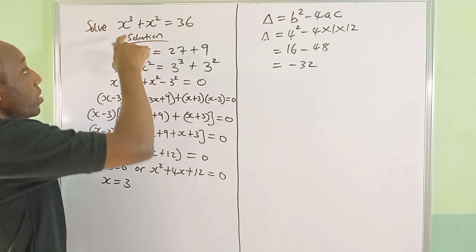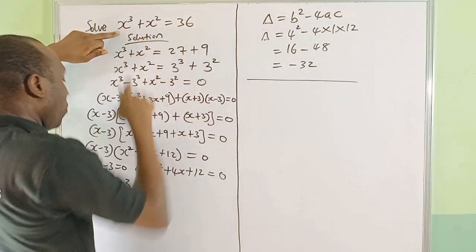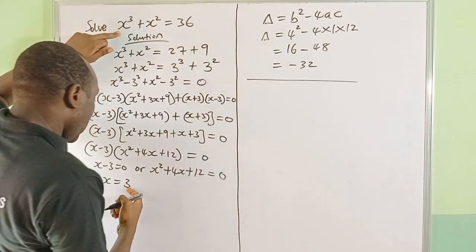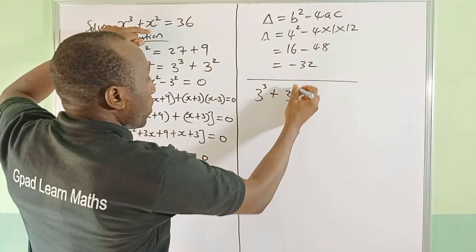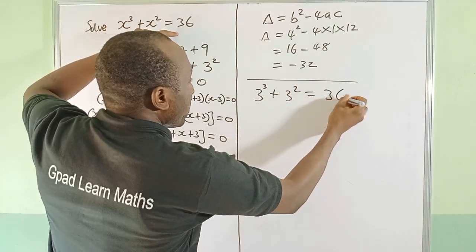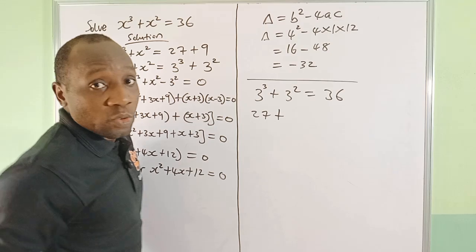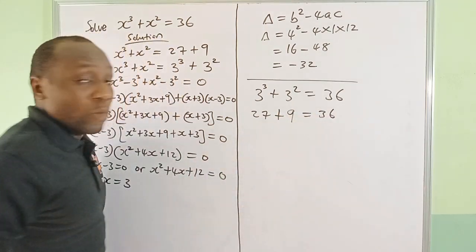Let's put it back here and see if when we put x = 3 into this equation we're going to get 36. So 3³ + 3². Let's see if this gives us 36. 3³ is 27, 3² is 9. So 27 + 9 will give me 36. Of course, which means this solution is valid for this equation.